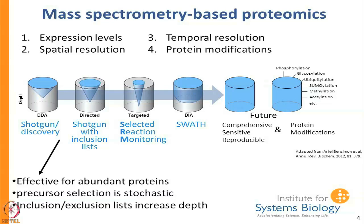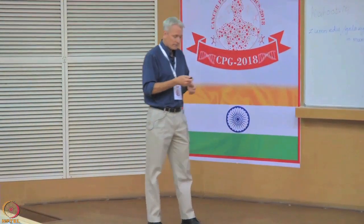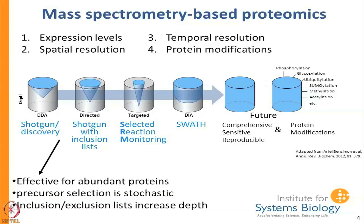The one we are most familiar with is called DDA. Basically, as peptides are eluting from the column you pick generally speaking the most intense one, you fragment it, and then you interpret those fragments — that is a spectrum and that is typical proteomics. DDA sees everything that is very concentrated, from most concentrated to least concentrated, and side to side represents how many of those ions at that level you have been able to see.